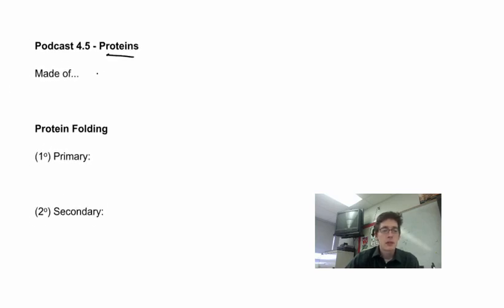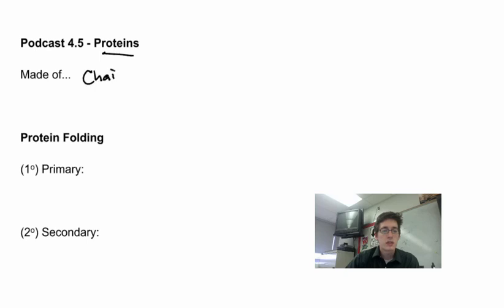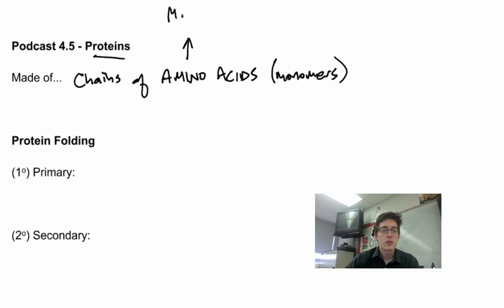So remember from class, proteins are made of amino acids or chains of amino acids. These are the monomers or the single pieces of the chain. The word amino means this is a molecule with nitrogen, and nitrogen is the letter N. So amino acids are molecules or monomers that have nitrogen as part of them.